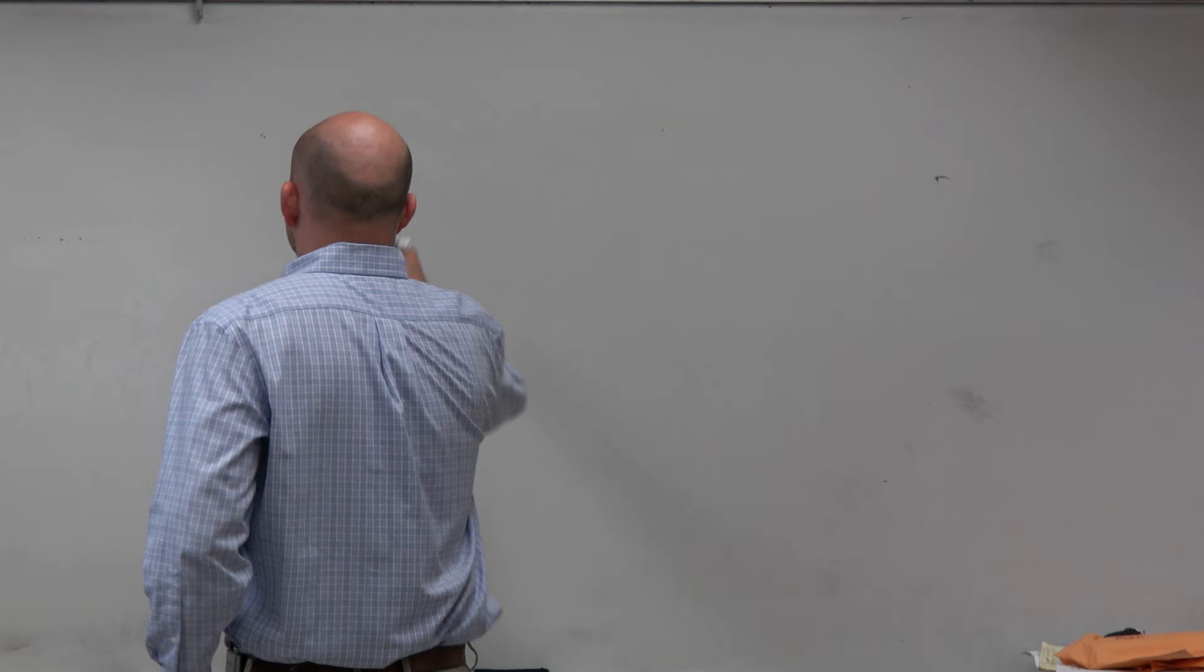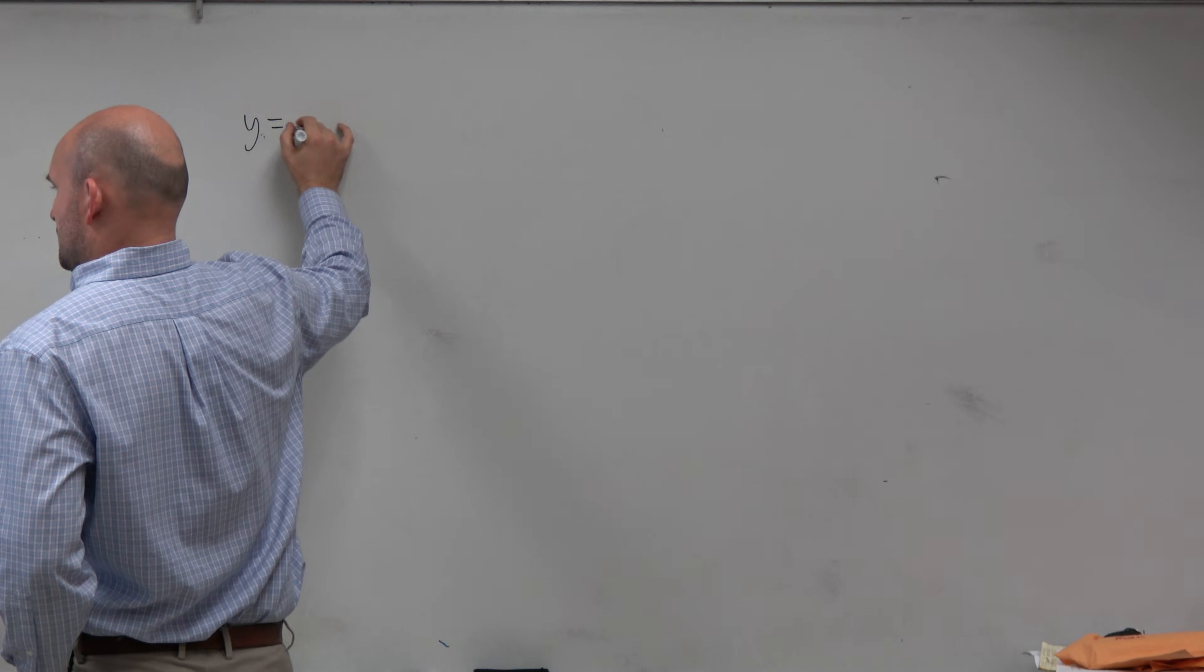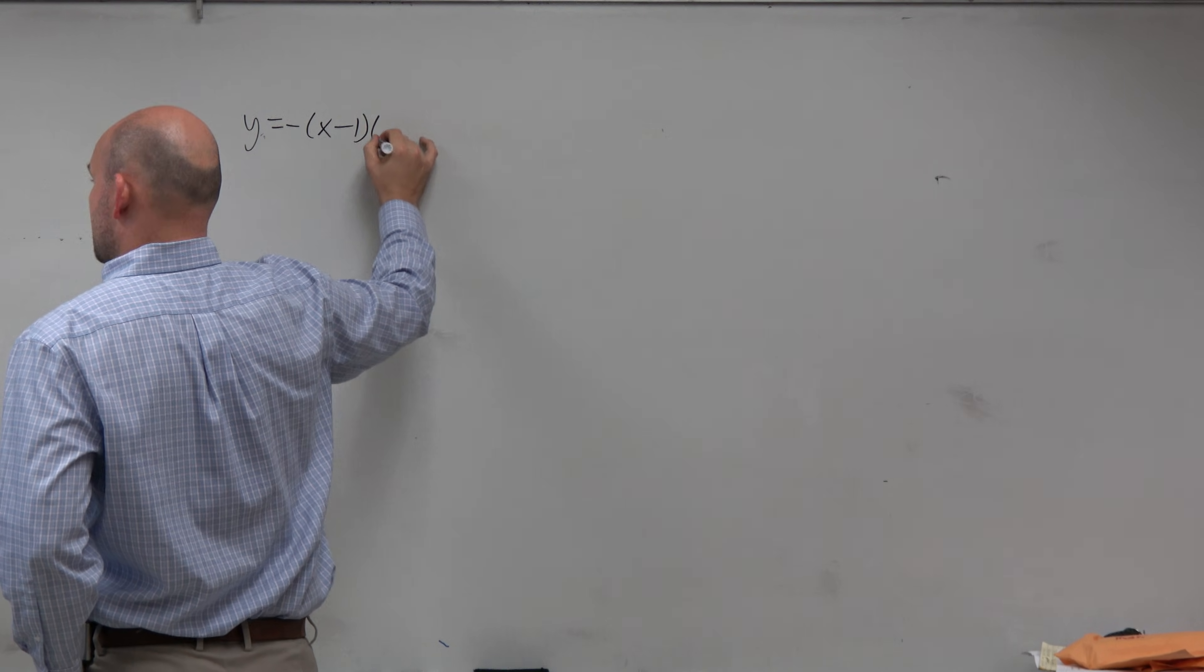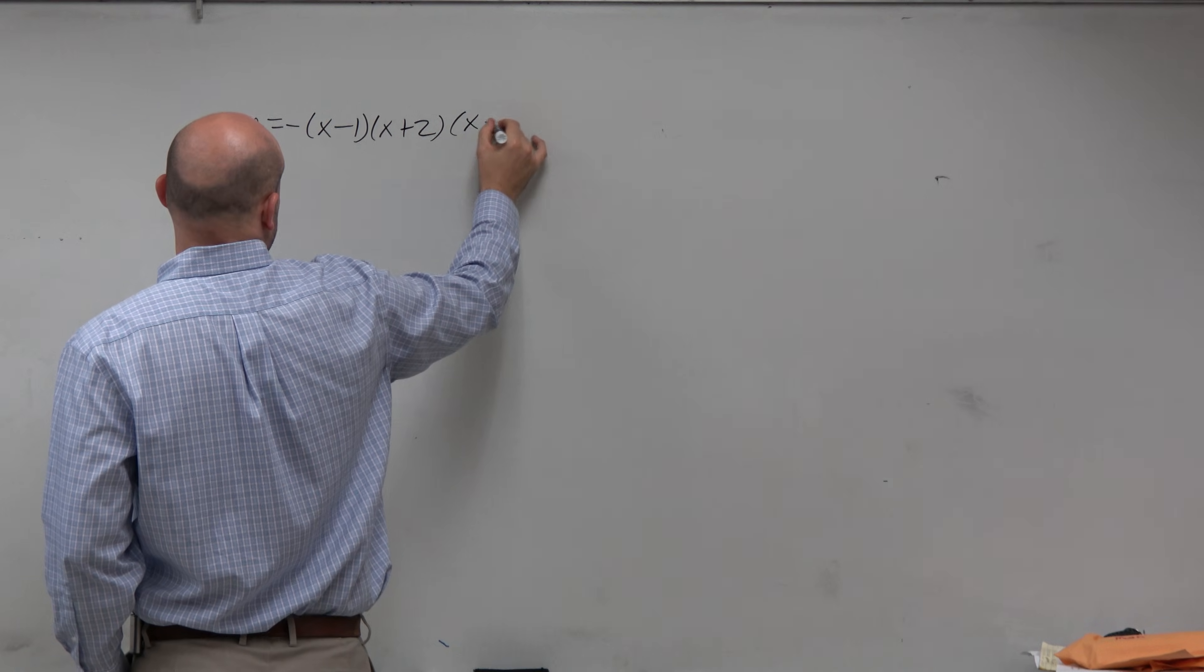So I'm going to move on to the middle examples for you just because I want to look at these. So let's go and take a look at y equals negative x minus 1 times x plus 2 times x minus 3.